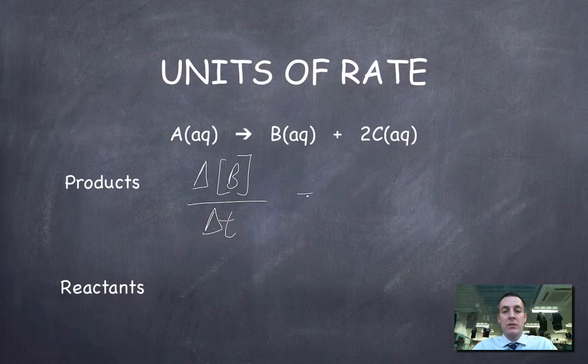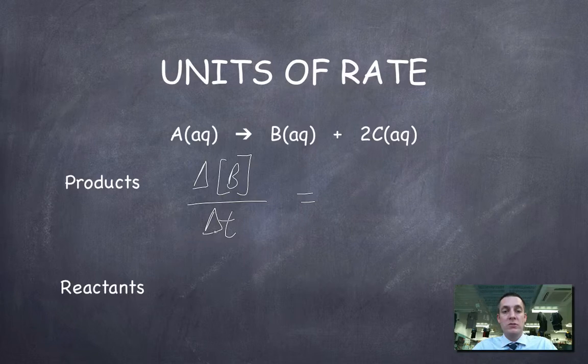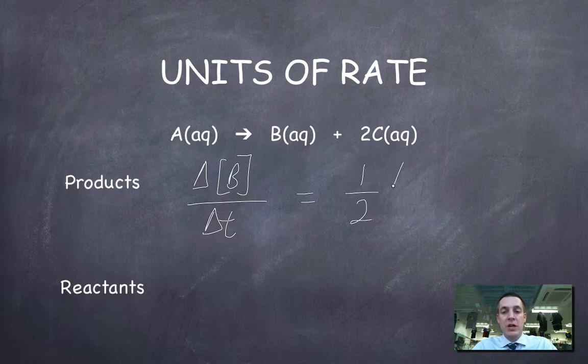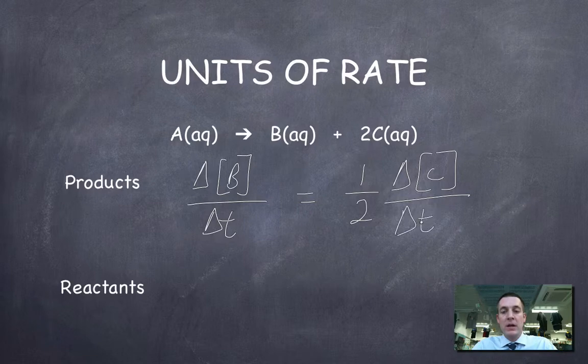Because there's a two to one mole ratio here, then I could say that the change in the concentration of B divided by the change in time is the same as a half of the change in the concentration of C divided by the change in time.